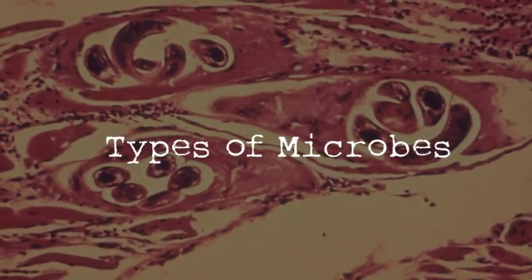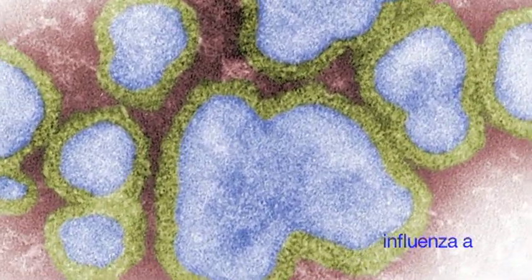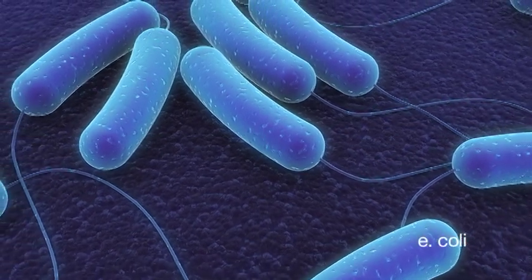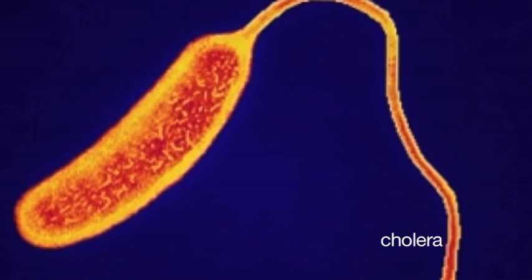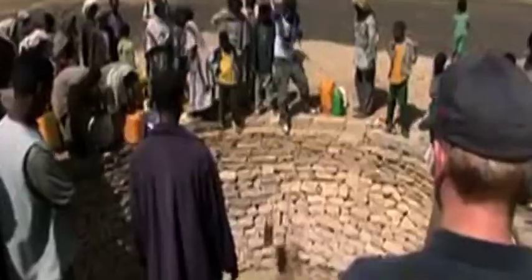A virus absolutely requires another cell for its growth and does not carry the machinery it needs for its own replication — it is not independent. Bacteria, on the other hand, are much larger single-cell organisms. They can live and replicate in the environment, and some of them — the bad ones — can gain access to the body and infect us.